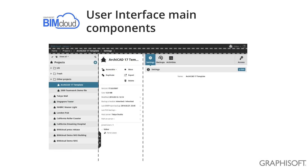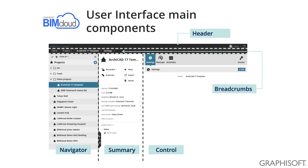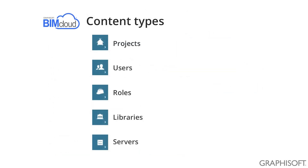The number of these entry points depends on the available permissions of the user on the BIMcloud. From the left-hand side you can select elements, and on the right-hand side you will see general information about these elements. The layouts of all the components hosted on the BIMcloud are very similar, so you don't have to learn different layouts for them. We host projects, users, roles, libraries and servers on this BIMcloud, and the management interface provides management tools and functions for all five of them.